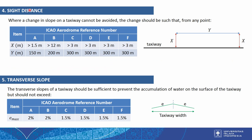The fourth component is side distance. Where a change in slope cannot be avoided, the change should be such that from any point at a specified height (y) above the taxiway, there is a clear line of sight to another point at the same height, over a minimum distance x. Both x and y values are based on the ICAO aerodrome reference code letter from A to F.